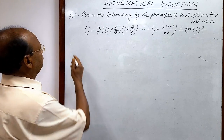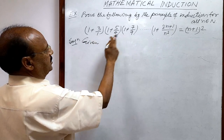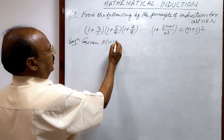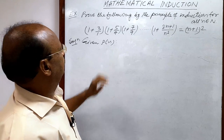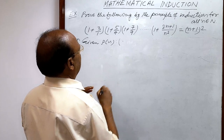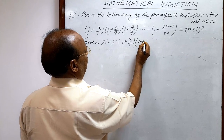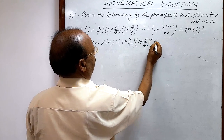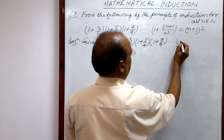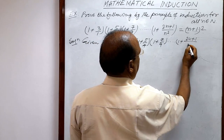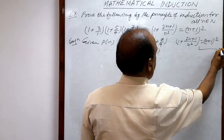Let us see the solution. This mathematical statement is denoted by P(n). So P(n) is: 1 plus 3 by 1, into 1 plus 5 by 4, into 1 plus 7 by 9, and the nth term is 1 plus 2n plus 1 by n square, equal to n plus 1 whole square. Let us call it relation number 1.